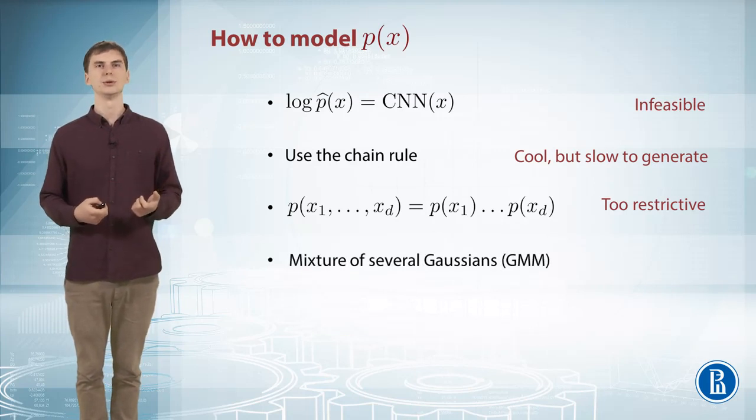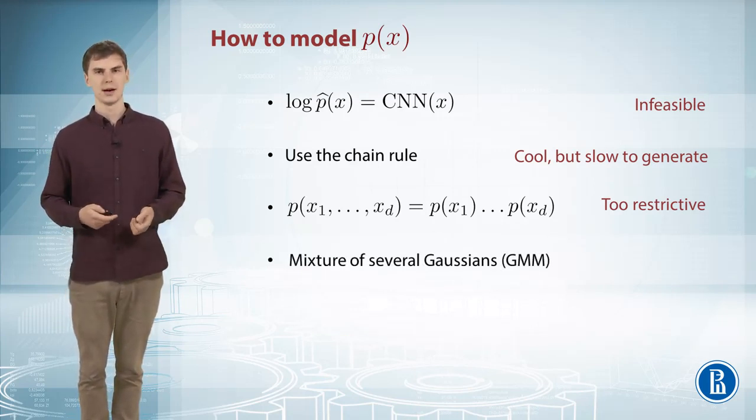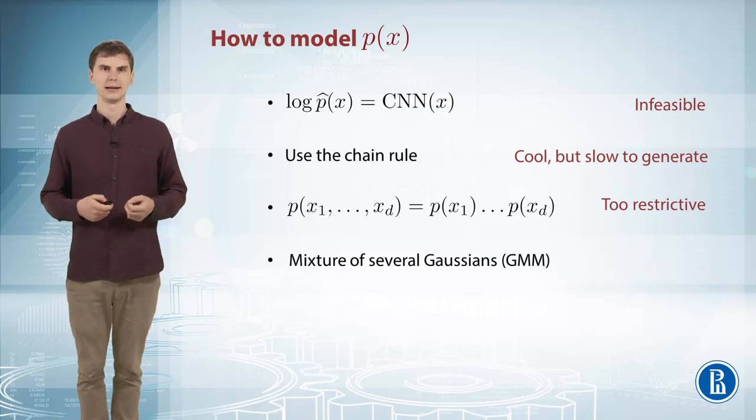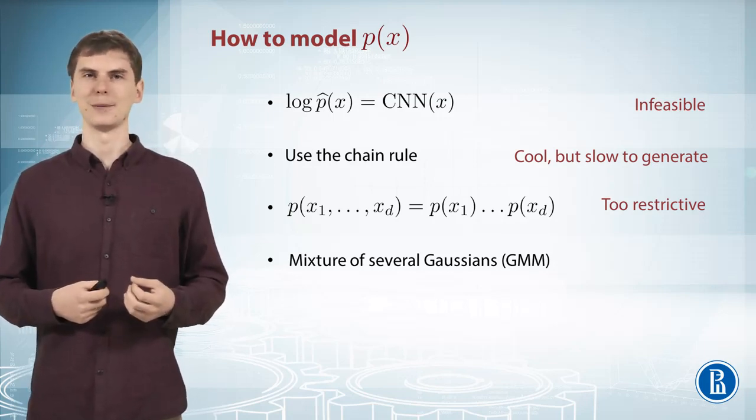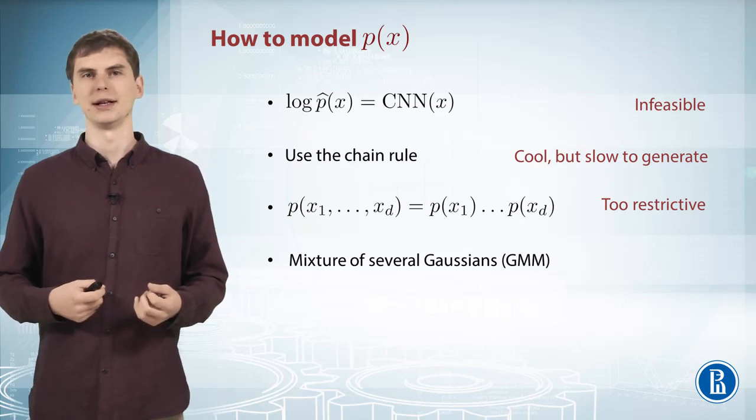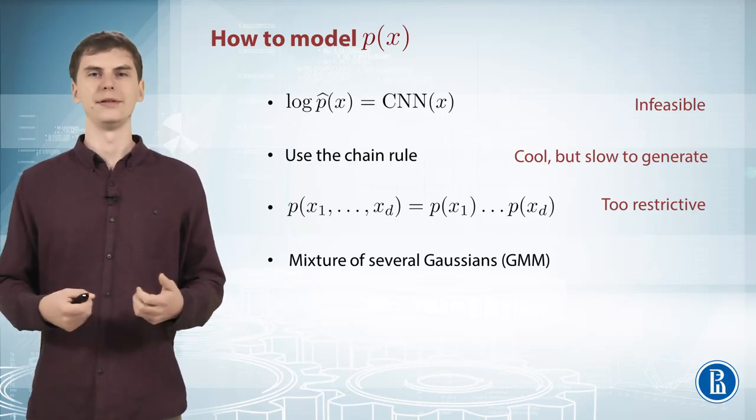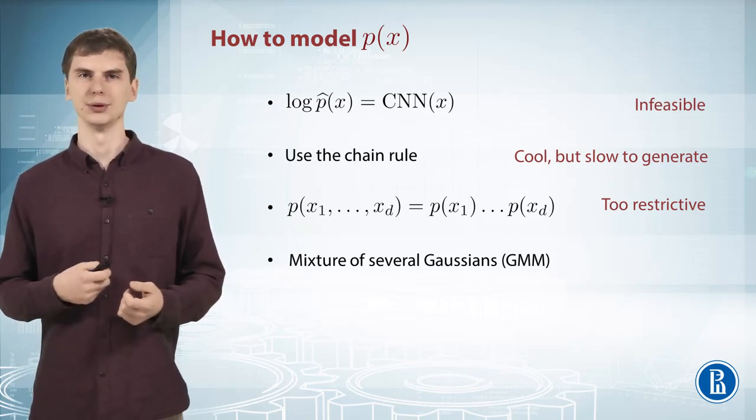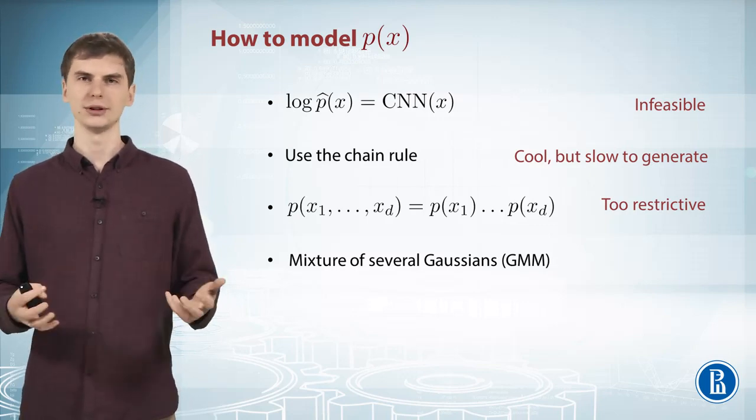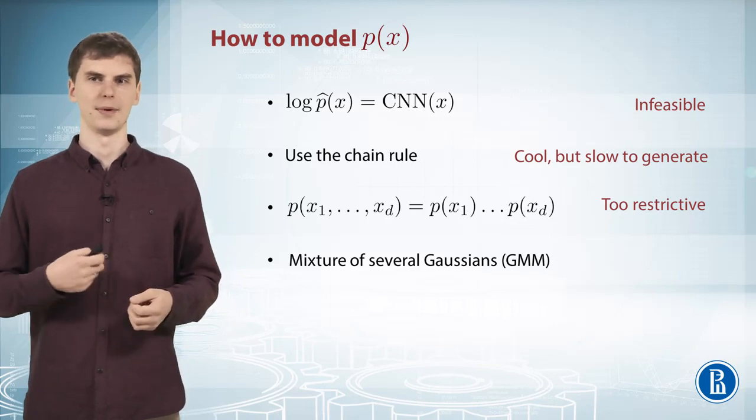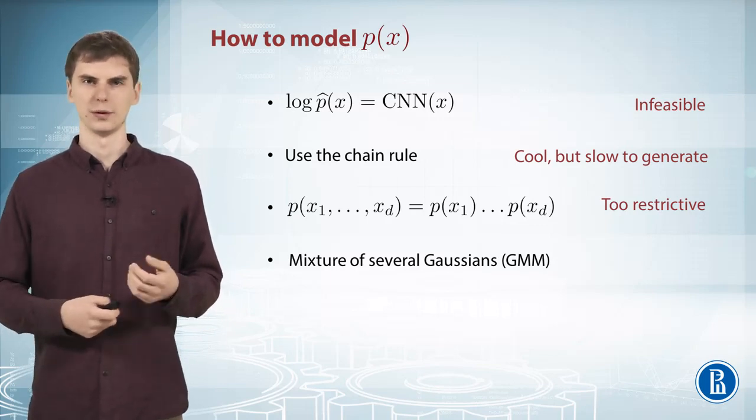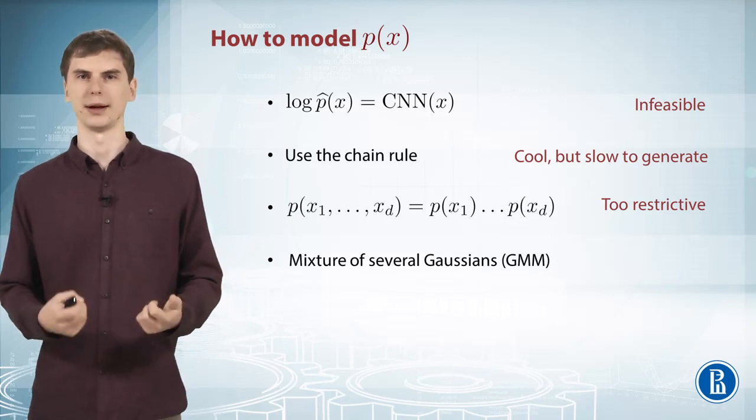One more thing you can do is use Gaussian mixture model. This is really flexible in theory. It can represent any probability distribution. But in practice, for complicated data like natural images, it can be really inefficient. You'll have to use thousands of Gaussians or components. In this case, the overall method will fail to capture the structure because it will be too hard to train it.